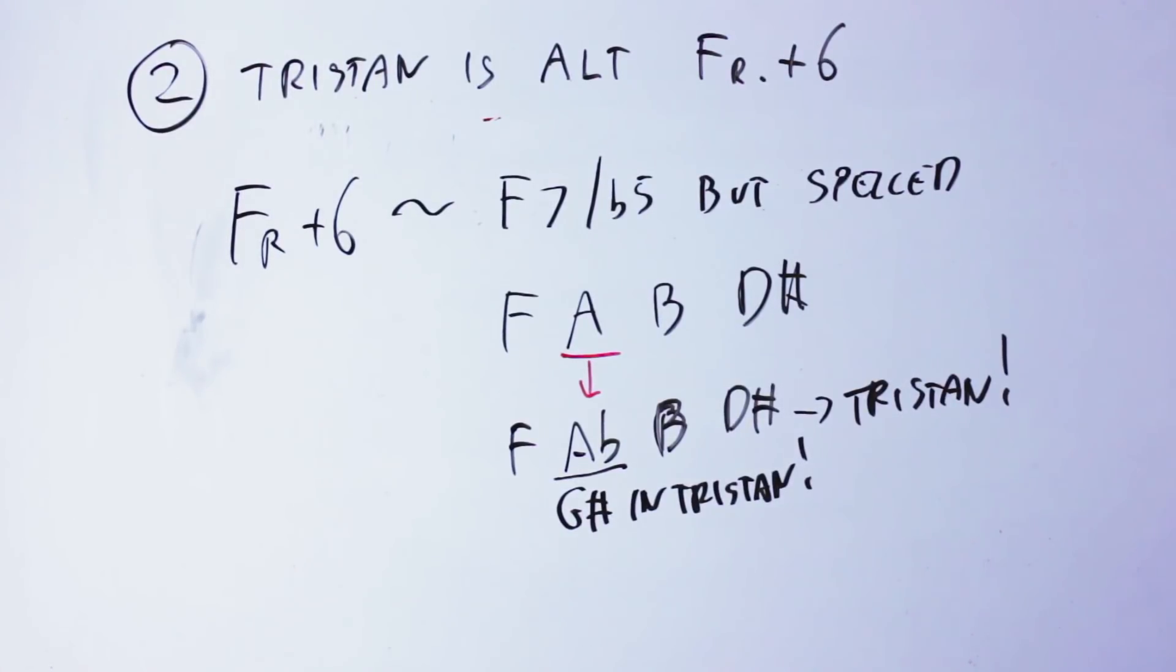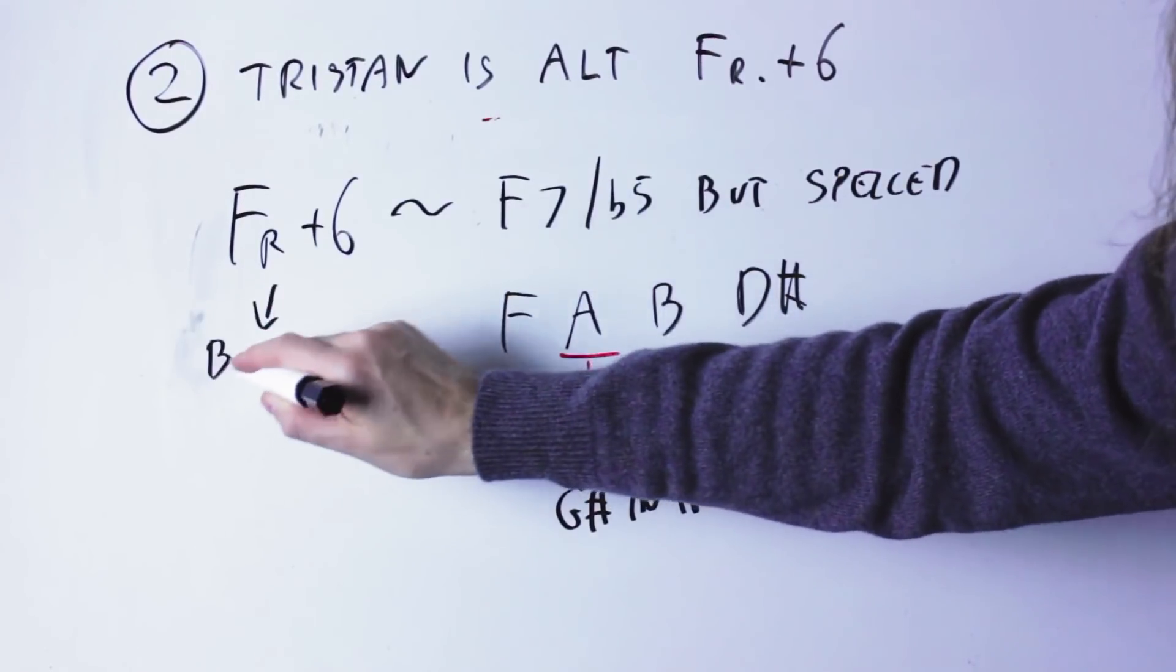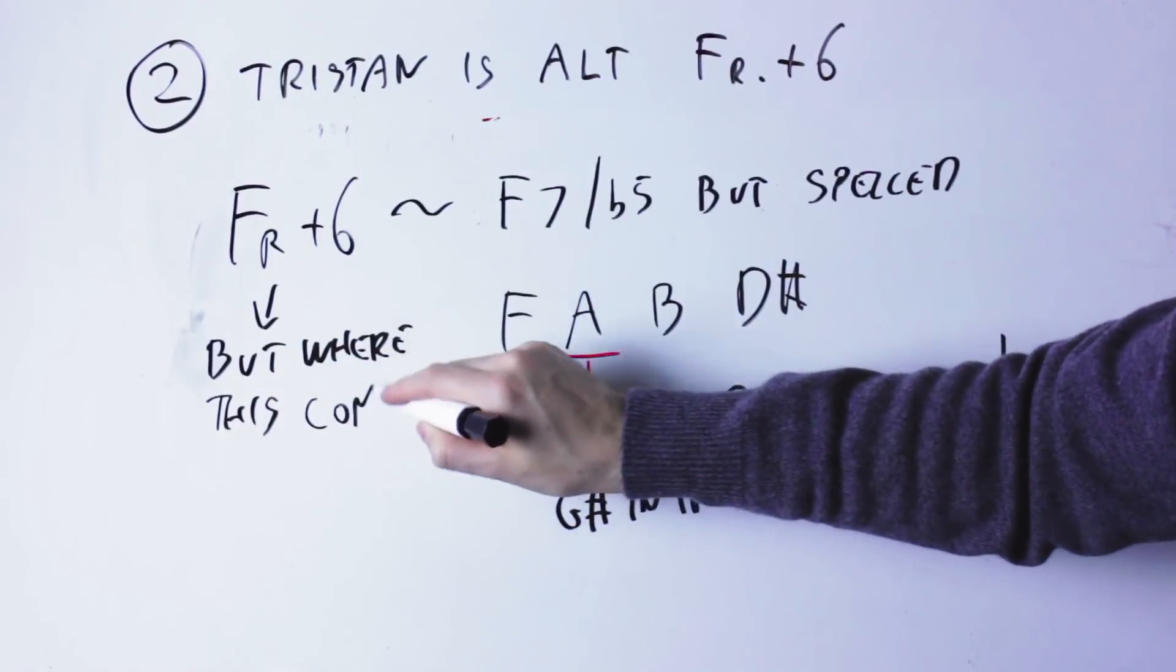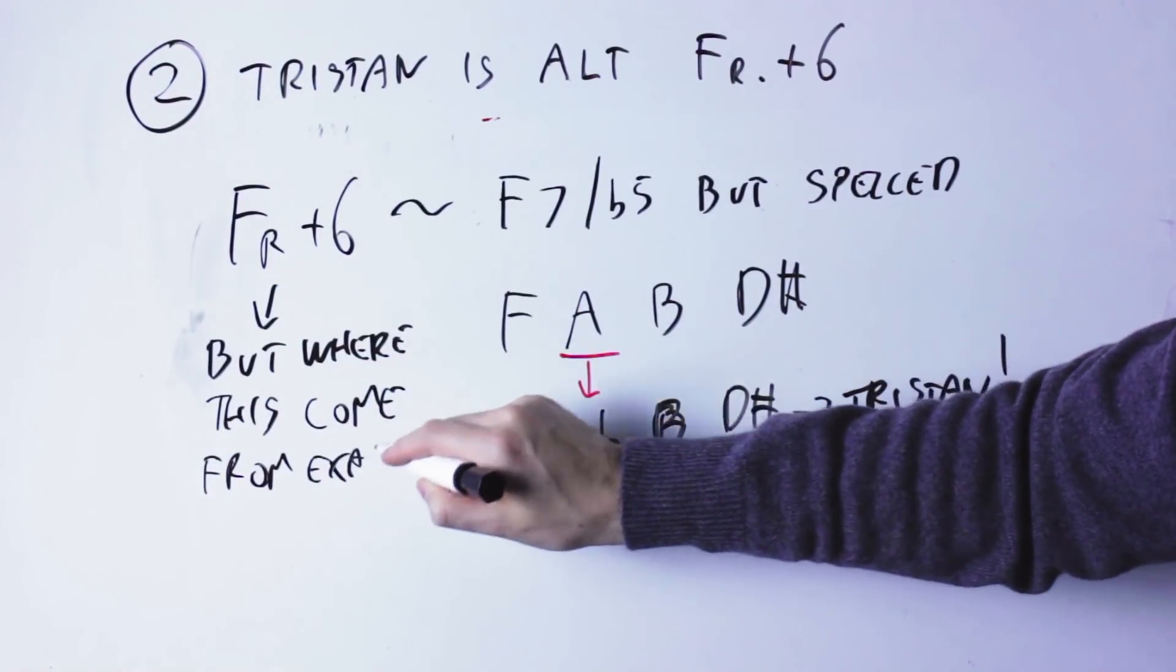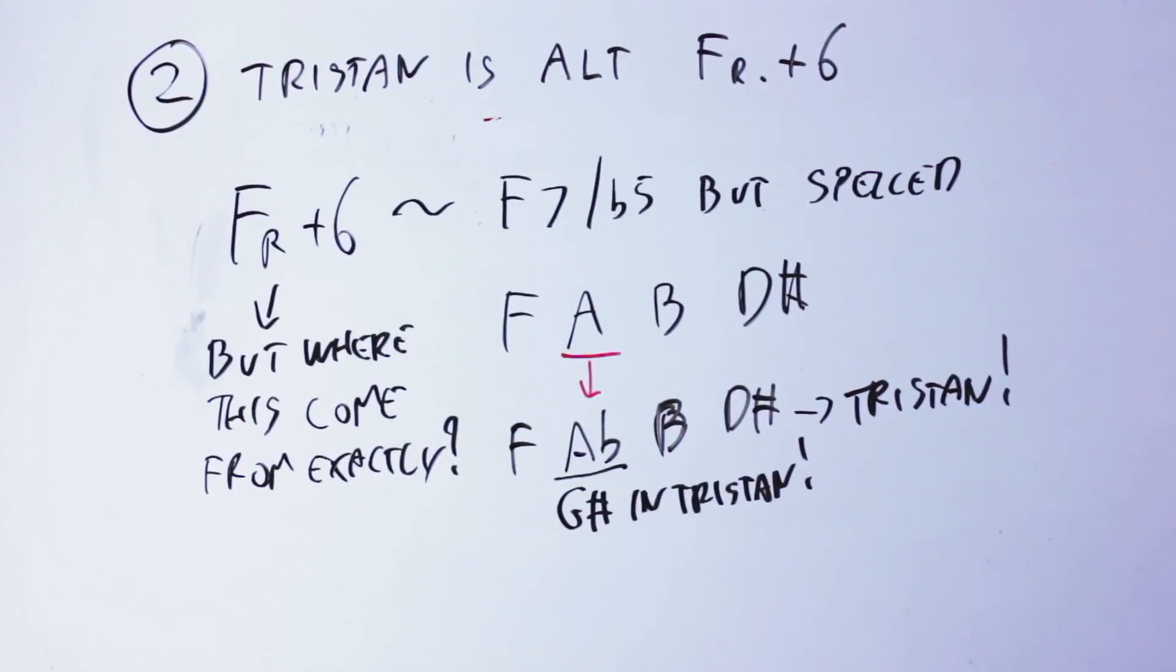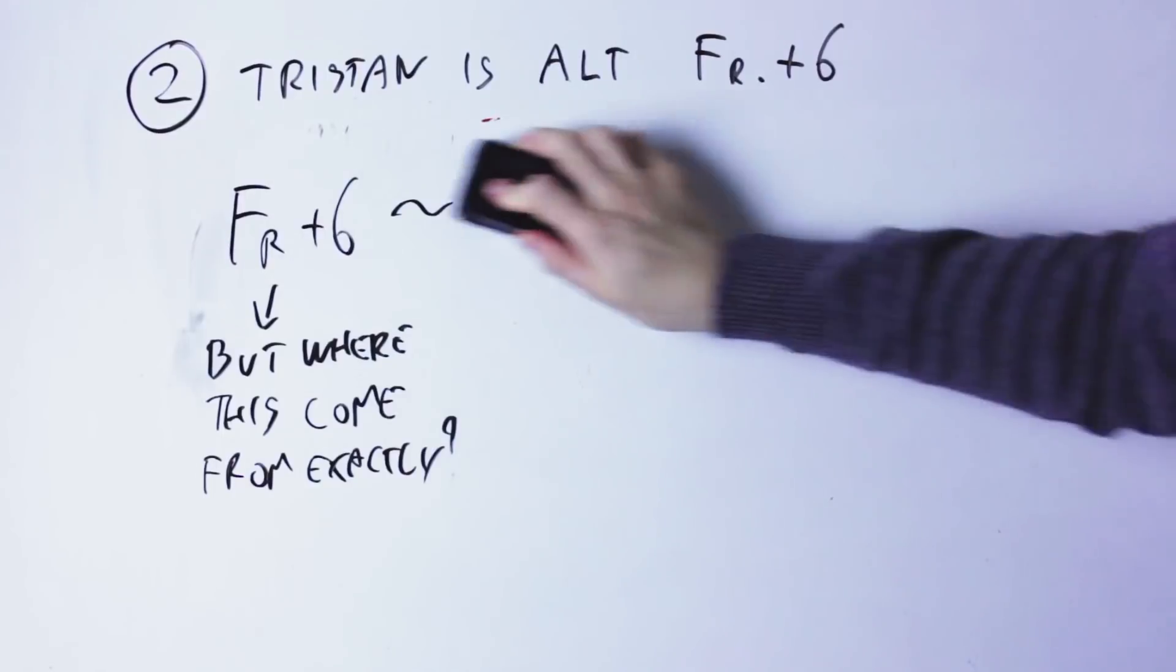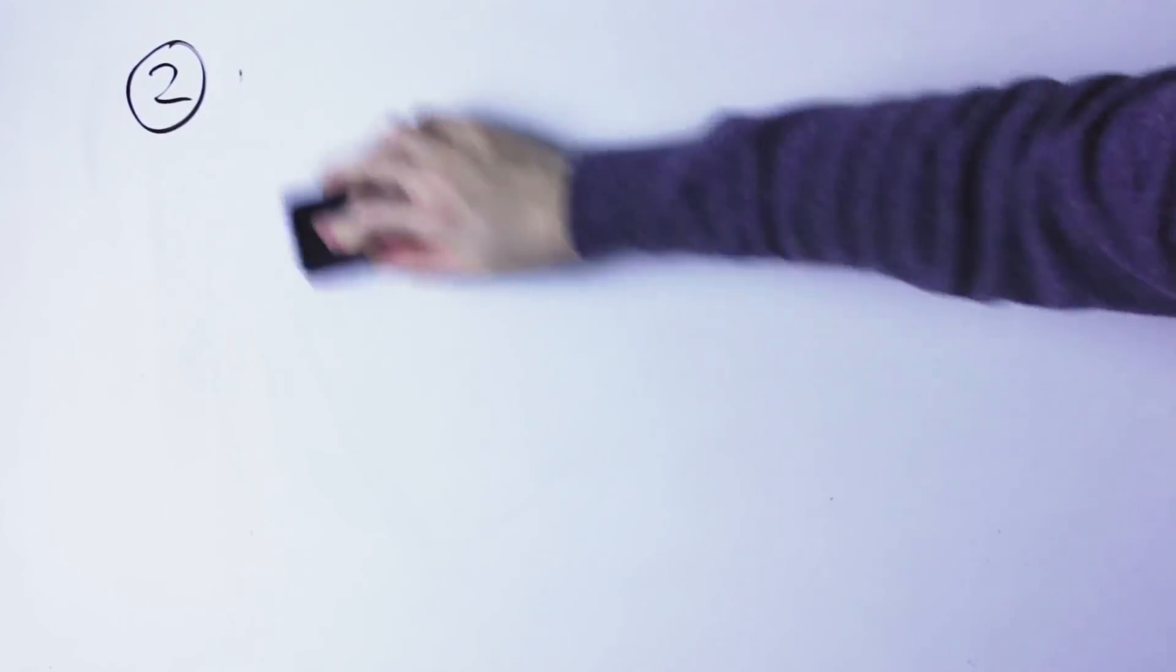And the second problem is that music theorists already don't really agree on the exact explanation of the augmented sixth chords. So even if we say that the Tristan chord is an altered French augmented sixth, which is, again, it's a bit farfetched, it's still a problem to explain what a French augmented sixth actually is.